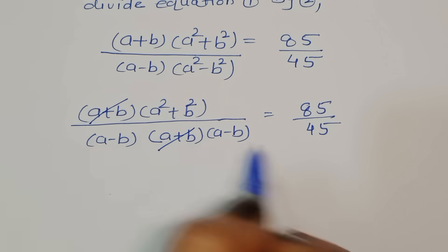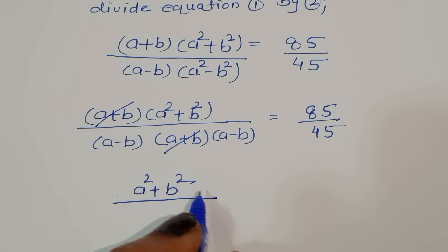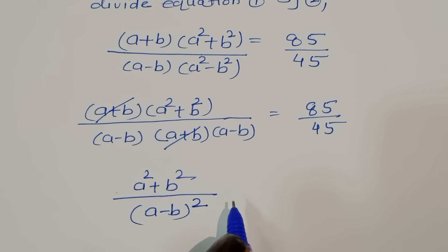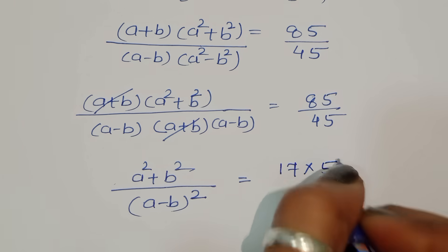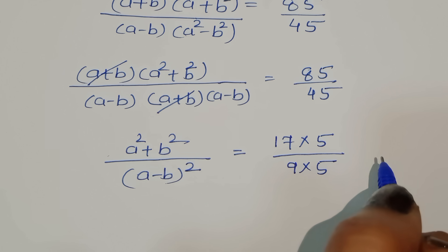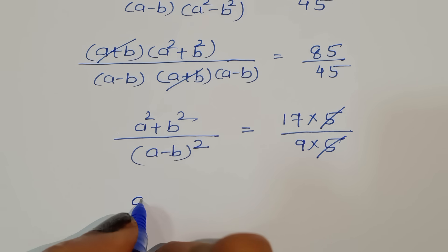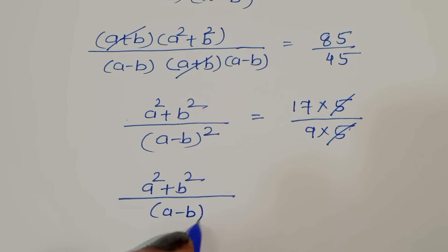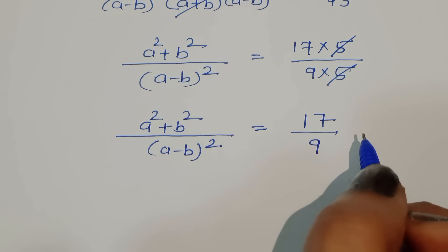We can cancel (a + b) from the numerator and denominator. Also, 85/45 simplifies by dividing both by 5 to give 17/9. So we get: (a² + b²) / (a - b)² = 17/9.